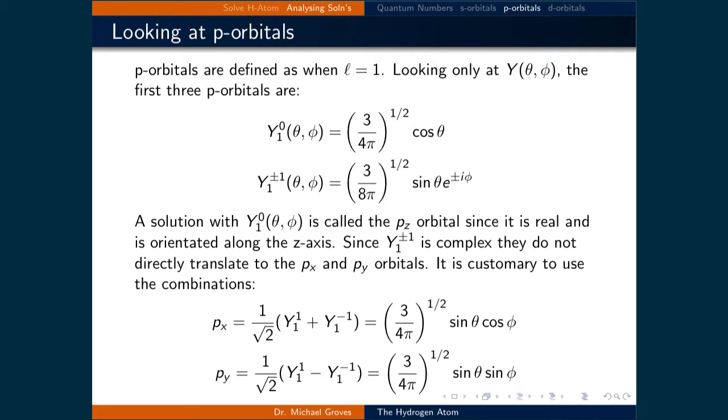Looking at the angular part of the hydrogen atom solution, Y as a function of theta and phi, the three solutions are the square root of 3 over 4π times cosine theta, and the square root of 3 over 8π times sine theta e raised to the power of plus or minus i phi.